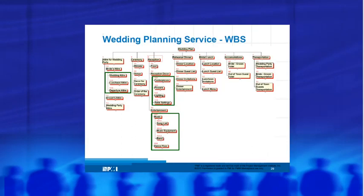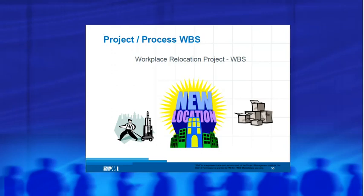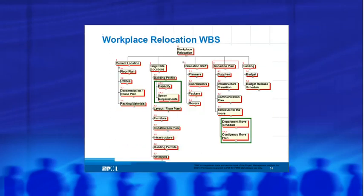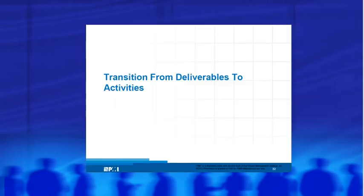Here's an example of a wedding planning service. You have attire, ceremony, reception. You may struggle at first to think about the scope of a project in terms of deliverables, eliminating action words and putting only nouns in your work breakdown structure — but it can be done. Here's an example of a workplace relocation project: you've got current location, target site, relocation staff, transition plan. The project starts with determining what it will deliver. Now, the activities are very important — they just don't go on the work breakdown structure. Activities, cost, people, milestones — these are elements of the project schedule, and the work breakdown structure is an input to the development of the project schedule.